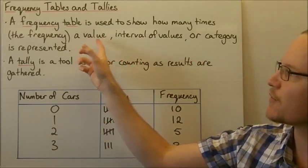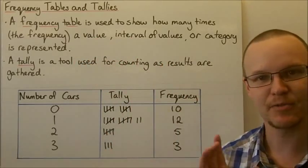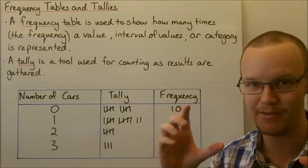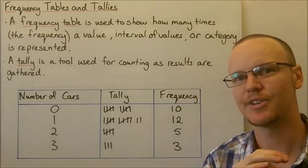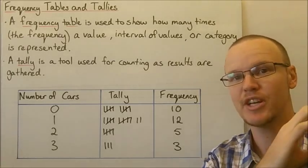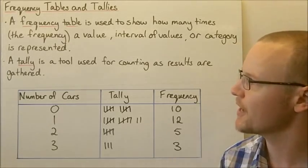If we have a look at a set of values, a set of items that might be values, it might be intervals of values from one value to another value for each sort of item or a category. Each item might be a different category, maybe it's a different subject, mathematics, science, English, history, something like that.